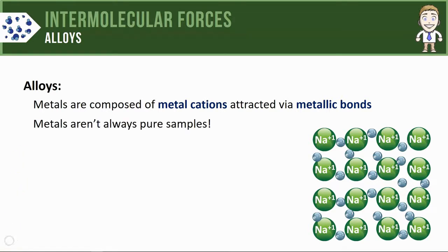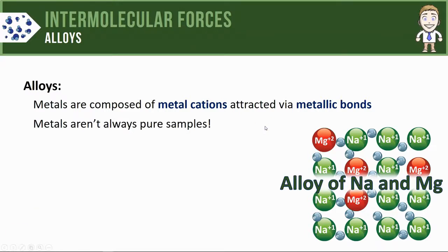With alloys, however, you'll see that metals aren't always pure samples. Instead of having only sodium cations in this solid structure, you might also have some magnesium cations mixed in. This sample is now referred to as an alloy of sodium and magnesium.